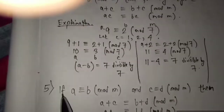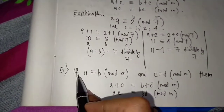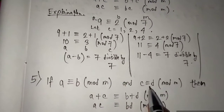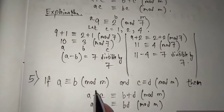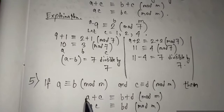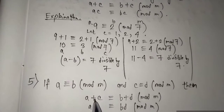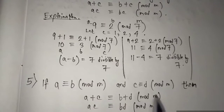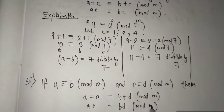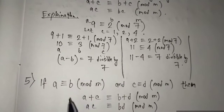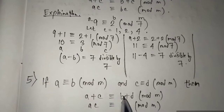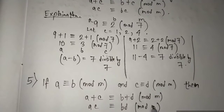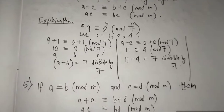You will find that if A congruent B mod M and C congruent D mod M, then for any integers A, B, C, D we get A plus C congruent B plus D mod M, and A times C congruent B times D mod M.